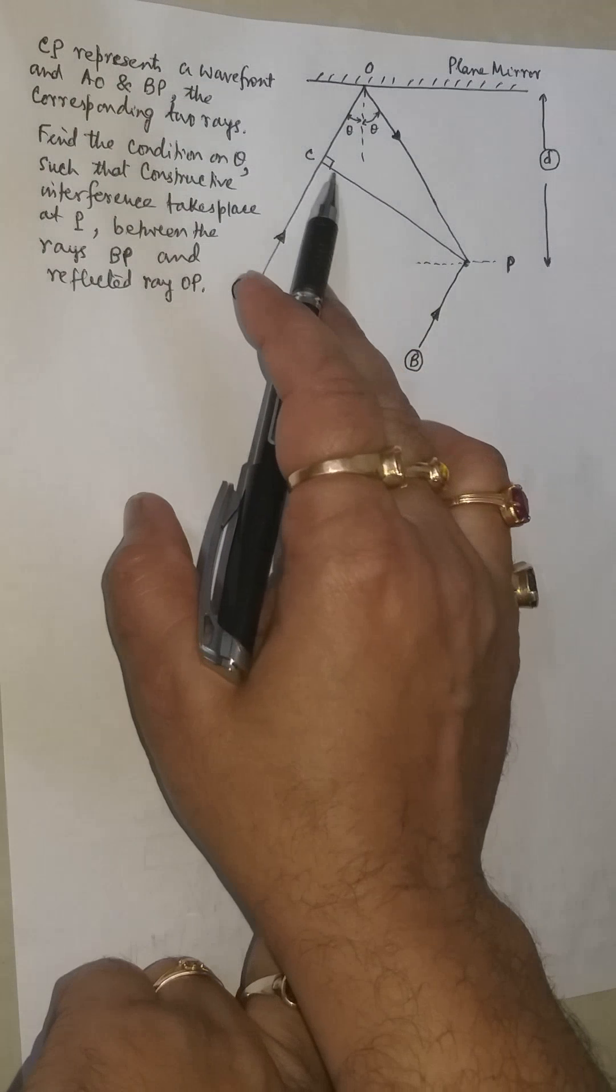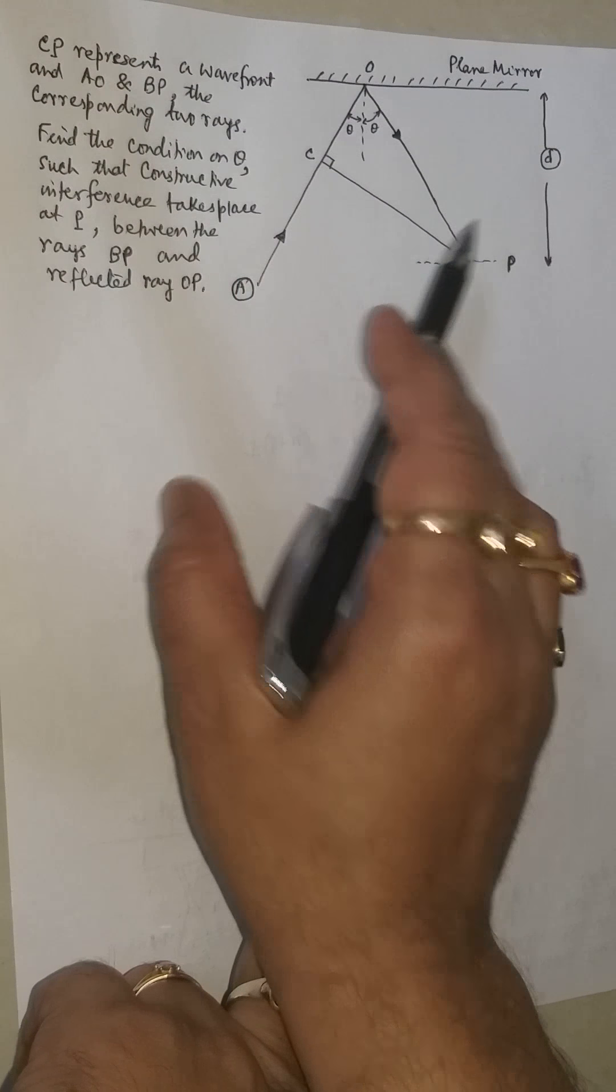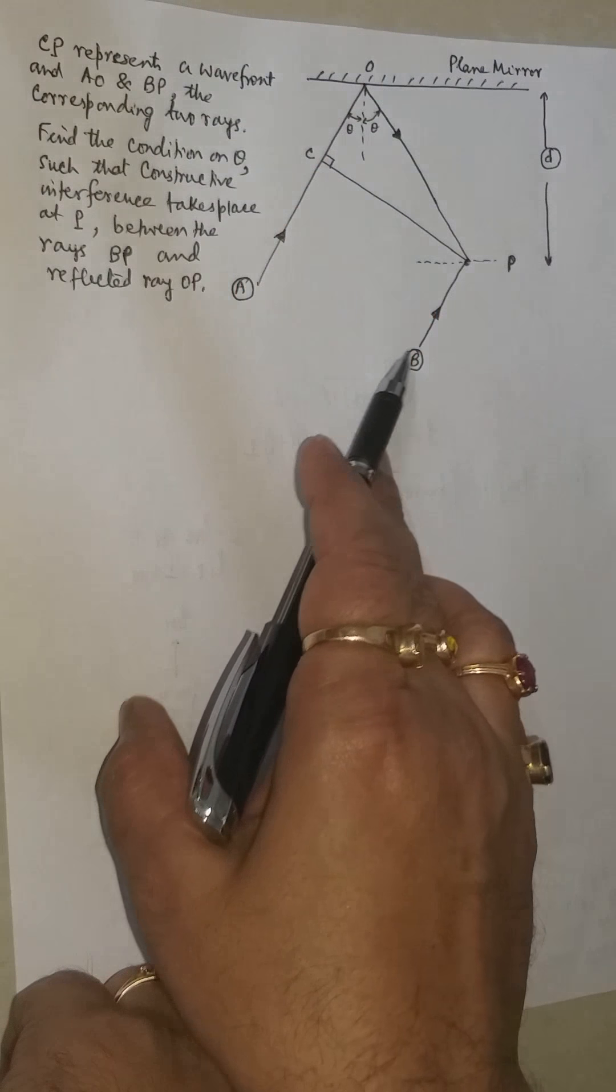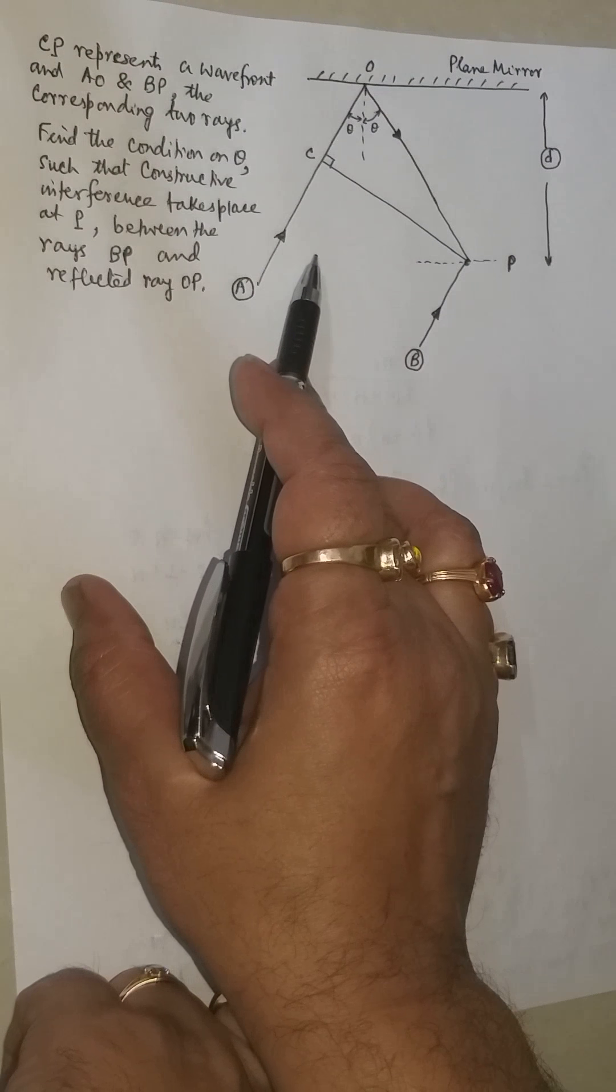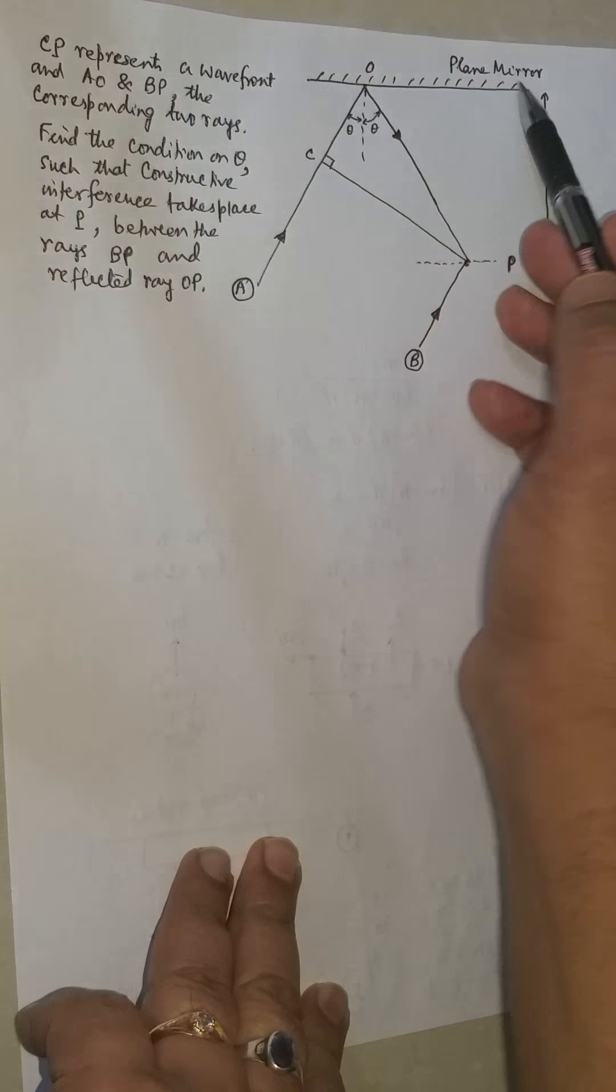In this question, it is given that CP is a wavefront and AO and BP are perpendicular to the wavefront. These are rays of light. This is a plane mirror.